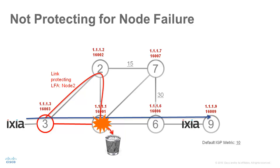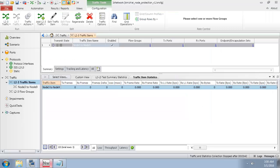Let's verify what happens when failing node 1 in this situation. We will use the traffic generator to send traffic from node 3 to node 9 at 1000 packets per second. We will then simulate the failure of node 1 by shutting down all the interfaces of node 1. Then we will verify the number of lost packets, which will be equal to the loss of connectivity duration in milliseconds. On the traffic generator, I have configured a 1000 packets per second traffic stream from node 3 to node 9.